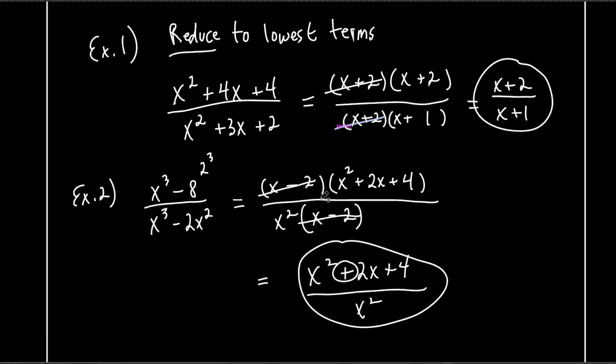We're left with (x² + 2x + 4) over x². I can't say it enough — you cannot cancel out the x² because it's being added to something else. I've taught this for 30-some years and I've seen students do this all the time. That's why we reduced to lowest terms — factoring first, then canceling what's being multiplied.